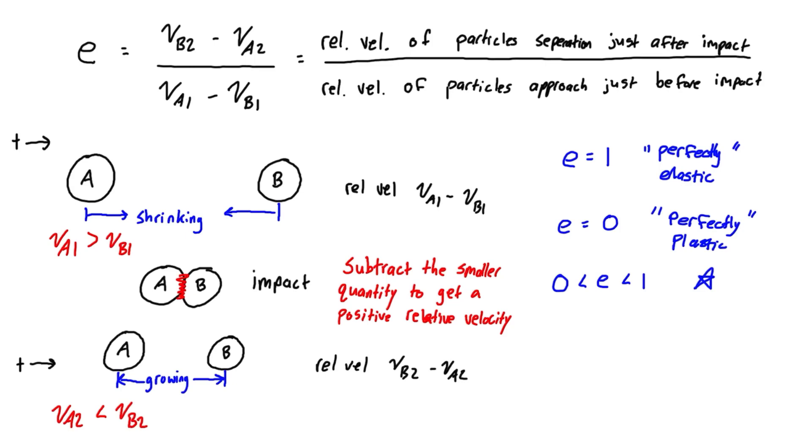So if we're dealing with an oblique example, it's only for the component of the velocities that are in line with the line of impact. You'll see that in the next few videos when I go over an oblique example, or you can check the previous video where I introduced the types of impacts that we can have.